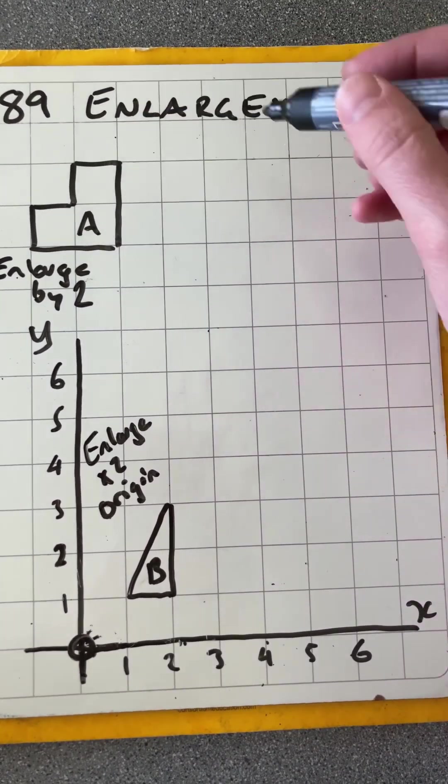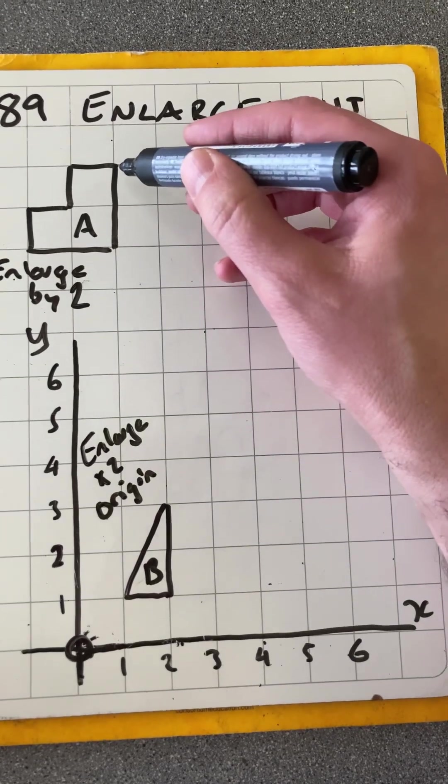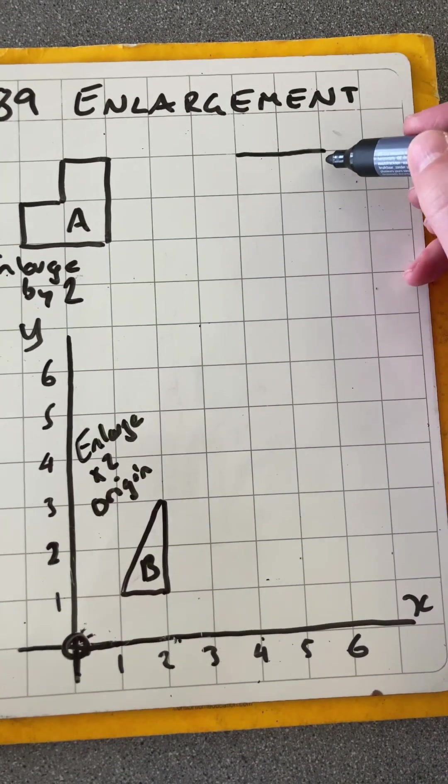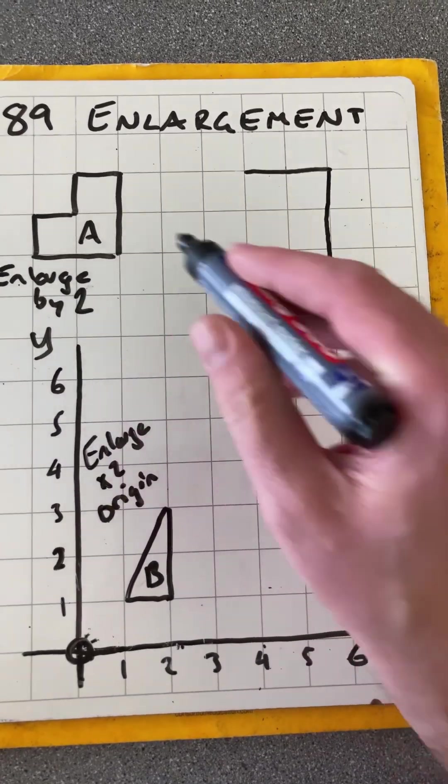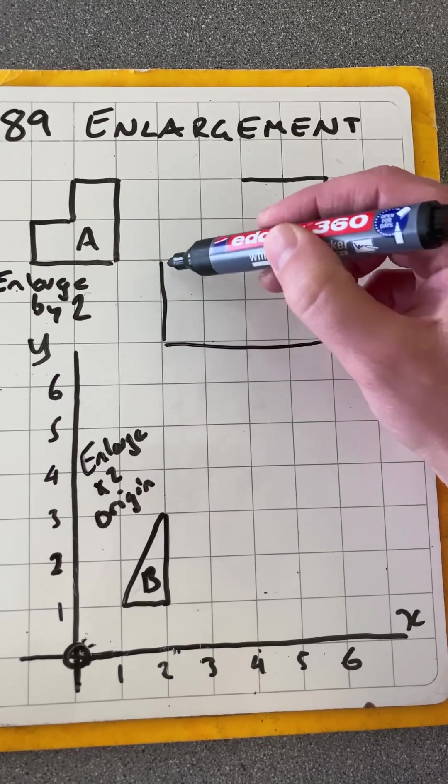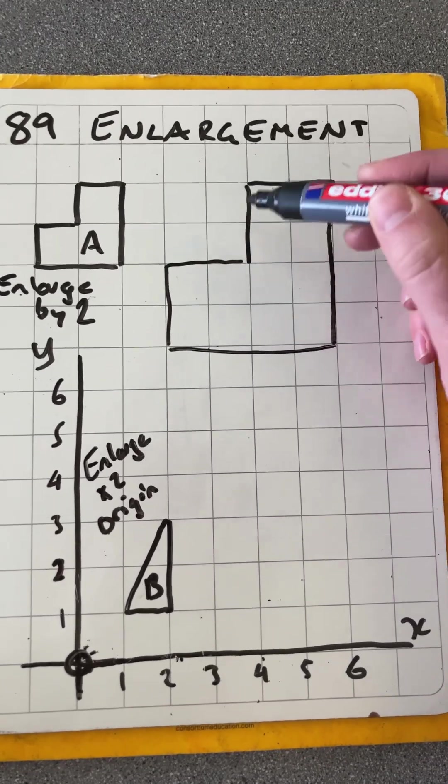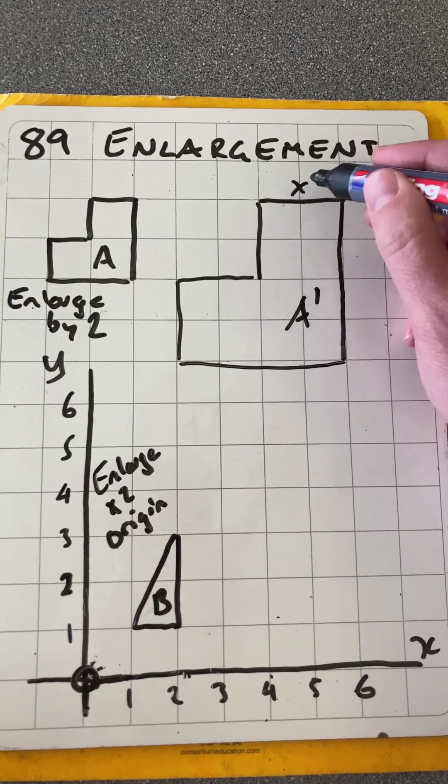So that length there is 1, so the new shape will have a length of 2. Down the side will be 2, so I'm going to multiply that by 2 and get 4. Along the bottom again was 2, so multiply that by 2. Up 2, and you can see that every dimension, every length for this image is now multiplied by a factor of 2.